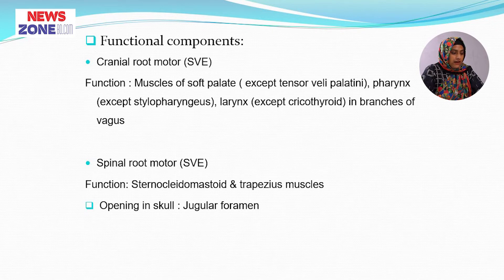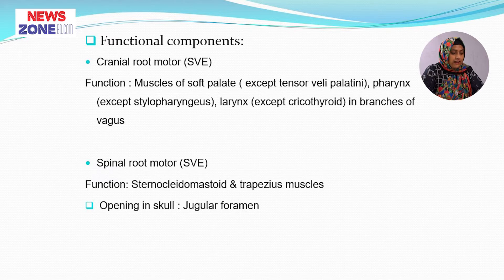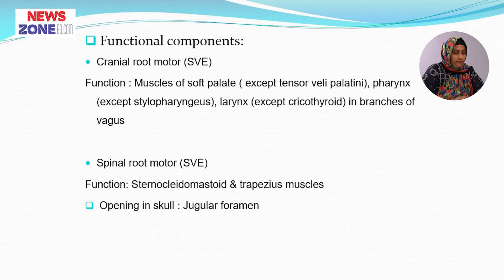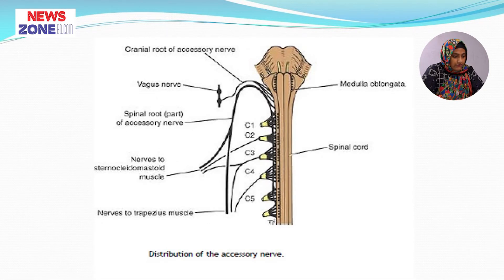This figure shows the cranial and spinal nucleus of the accessory nerve and their central connections. The functional component of the cranial root of the accessory nerve is special visceral efferent, supplying the muscles of the soft palate except tensor veli palatini, the pharynx except stylopharyngeus, and the larynx except cricothyroid, via branches of the vagus. The spinal root functional component is special visceral efferent, supplying only two muscles: the sternocleidomastoid and the trapezius. This passes through the jugular foramen.